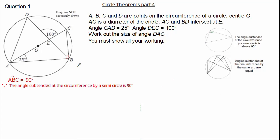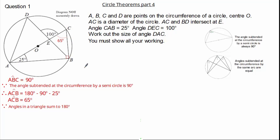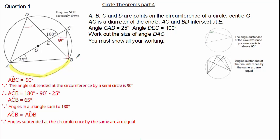From here we can work out angle ACB by simply doing 180 subtract our 90 subtract our 25, giving angle ACB to be 65 degrees. This is because angles in a triangle sum to 180 degrees. You might be able to notice angle ACB is exactly the same as angle ADB. This is because angles subtended by the same arc are equal. Therefore we know angle ADB is 65 degrees.